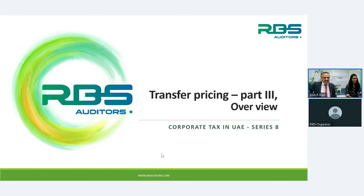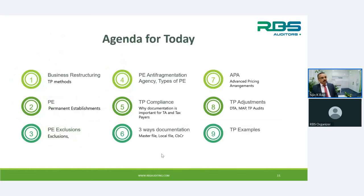I invite the speaker, Mr. Sijan K. Revi, to take over. Ladies and gentlemen, this is our eighth webinar series relating to corporate tax, and this is the conclusion session on transfer pricing. Today's agenda covers business restructuring and the TP methods adopted for it, permanent establishment, PE exclusion, PE anti-fragmentation, TP compliance, three-tier documentation — master file, local file, and CBCR — advanced pricing arrangements, TP adjustments, and some practical examples.